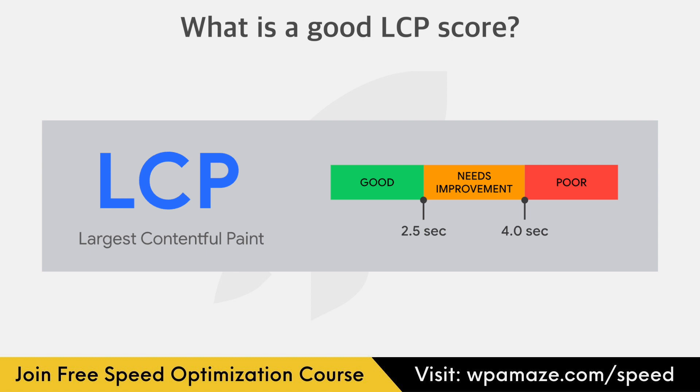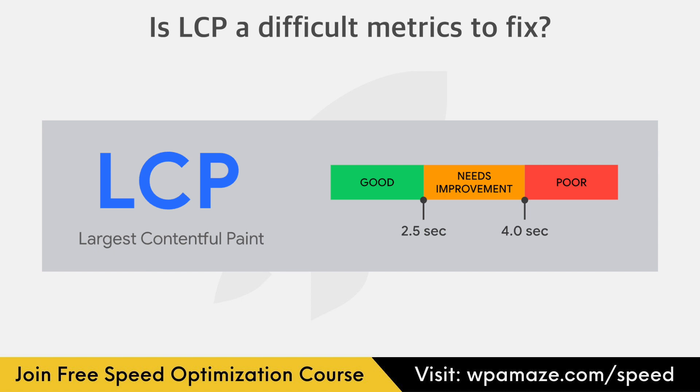Some might get confused when they hear 75th percentile. In other words, you can see it as more than 75% of the total page loads. An important note: most of the time, the LCP can be faster in the field data than the lab data. If you don't know what lab and field data are, kindly watch the PageSpeed Insights video where I've explained it in detail.